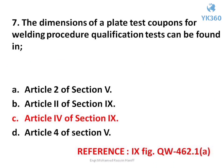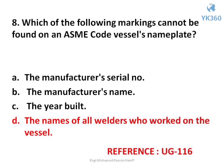Question number 7. The dimensions of a plate test coupon for welding procedure qualification tests can be found in — options are: A. Article 2 of Section VB, B. Article 2 of Section 9, C. Article 4 of Section 9, D. Article 4 of Section V. Answer is option C. Article 4 of Section 9.